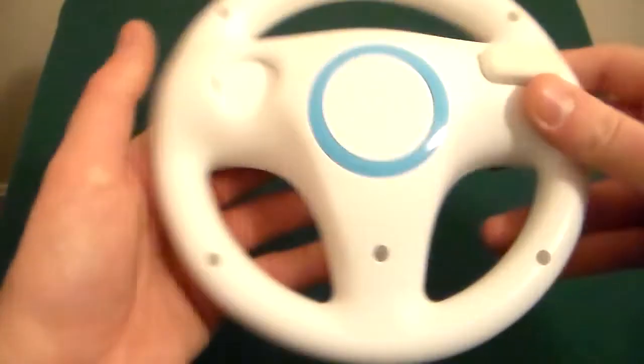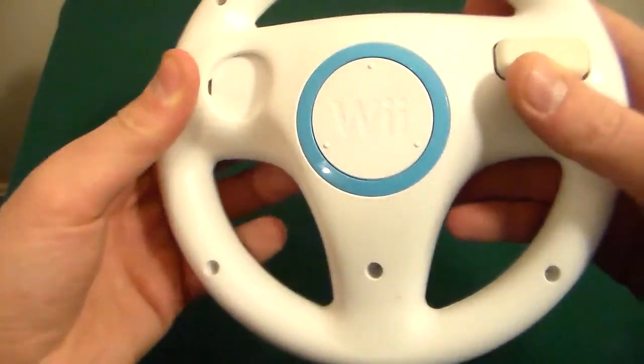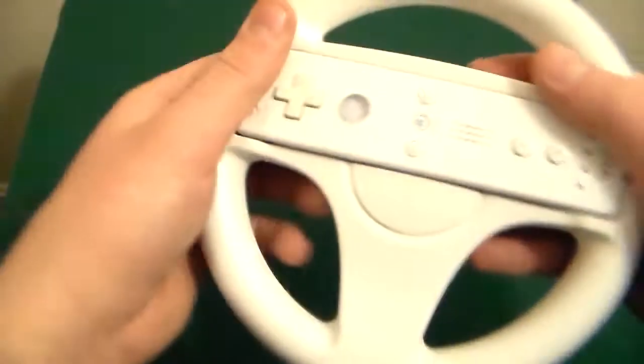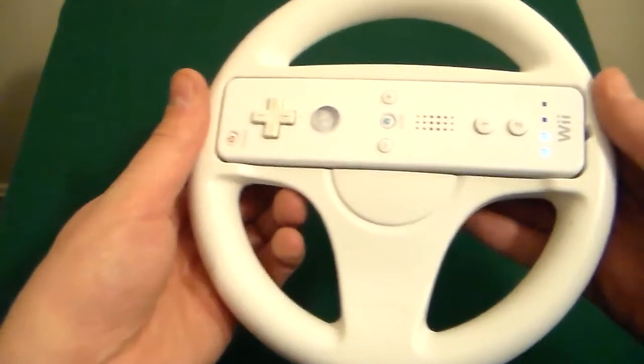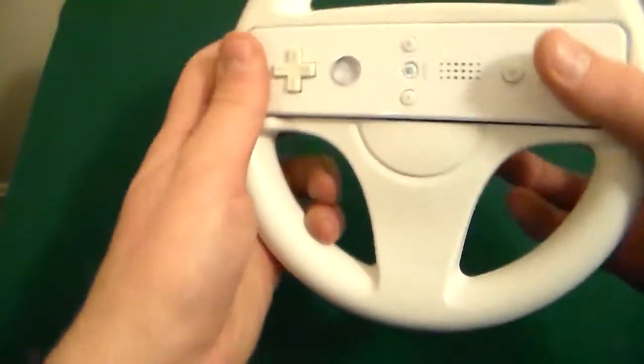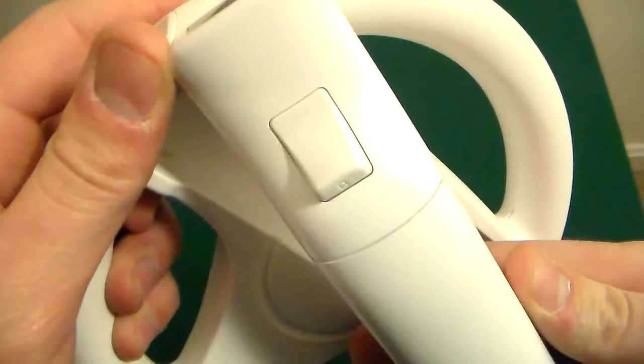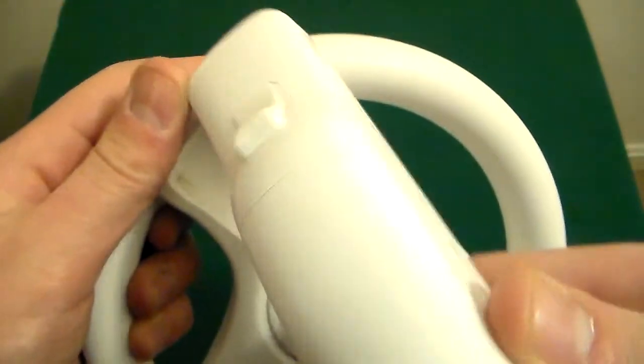And on the back, there's that little hole, and what that's for is you can just pop the Wiimote right out. You see that button from before? That is used in case you want to trigger the button that's actually on the Wiimote back there. The Z trigger, I believe it is. No, the B trigger, I'm sorry.